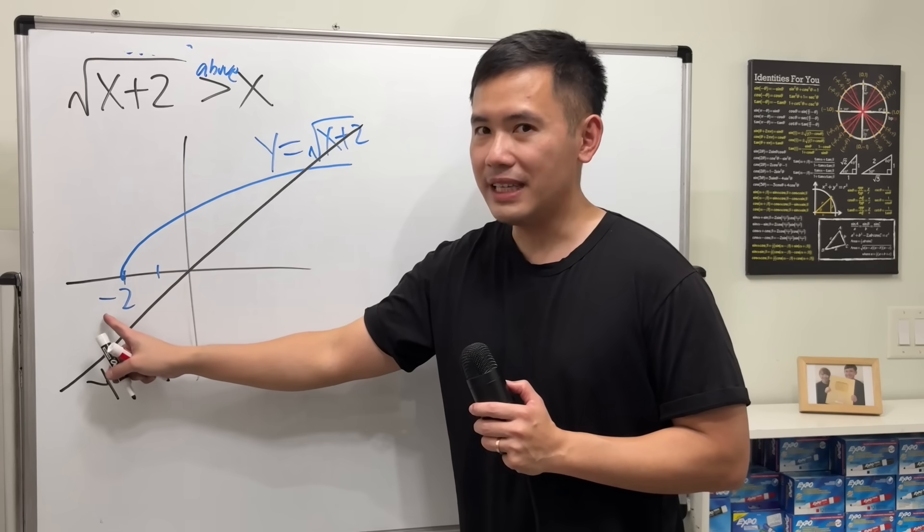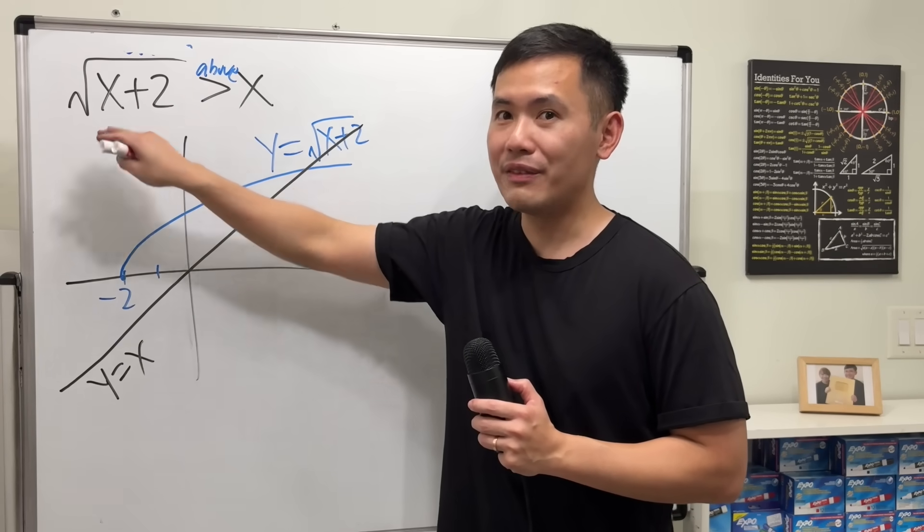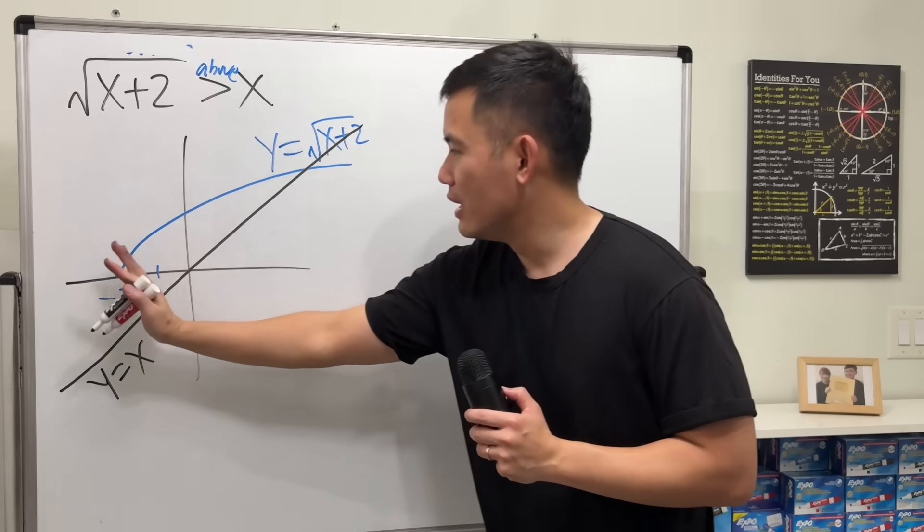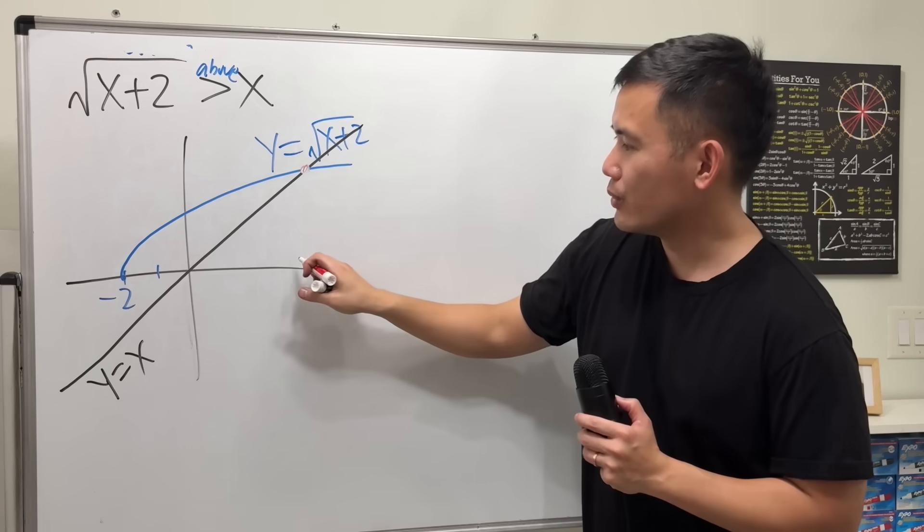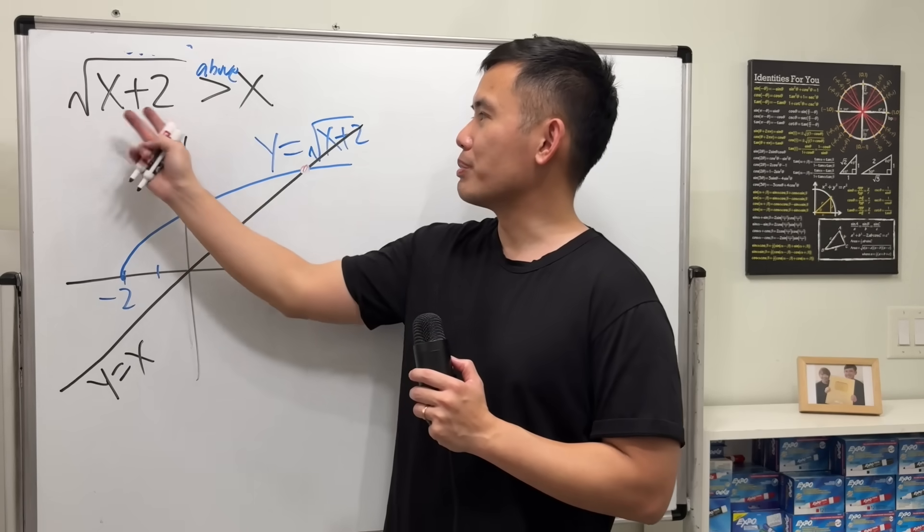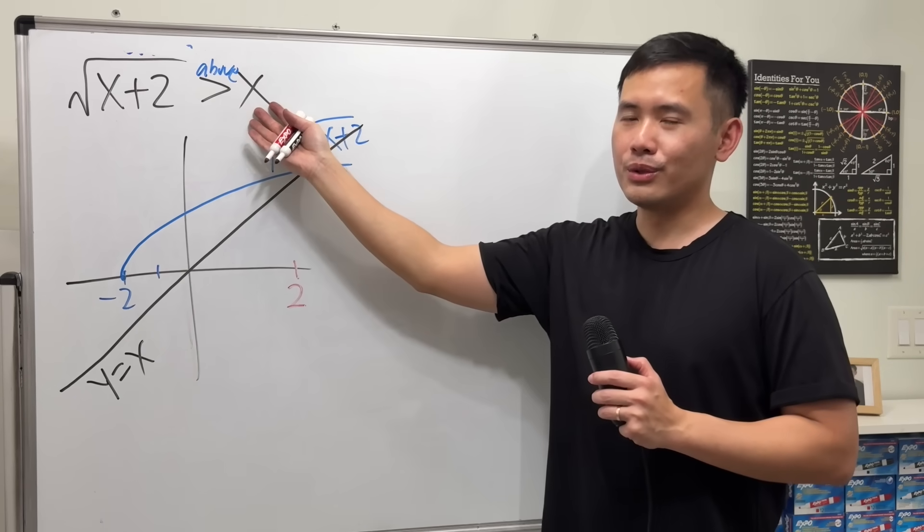Our starting is actually at negative 2, because we have a domain issue when we have square root. Starting is when x is equal to negative 2, up to whatever this point is. And I will tell you, this point right here is positive 2. Why? Because positive 2 plus 2 is 4. Square root of 4 happens to be 2.